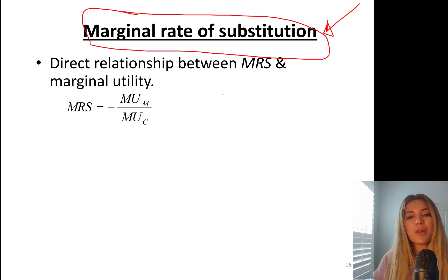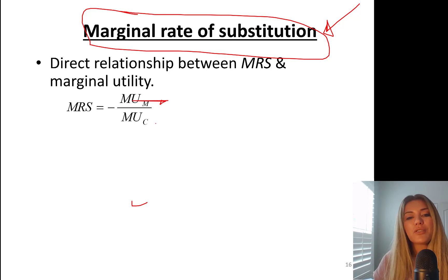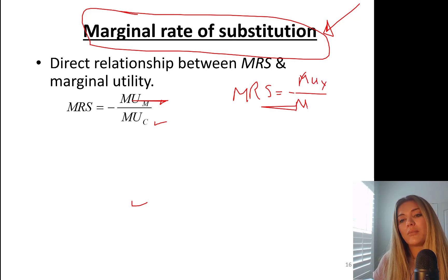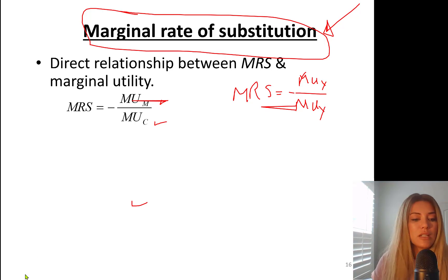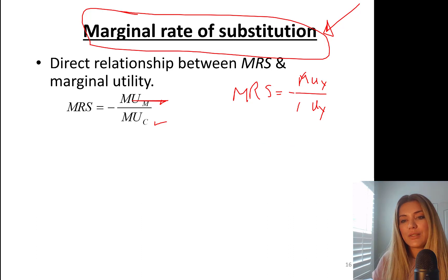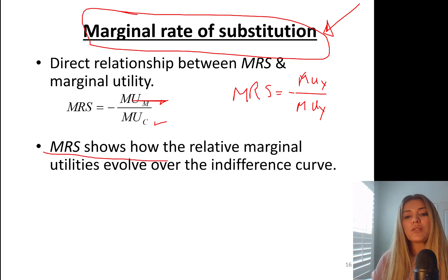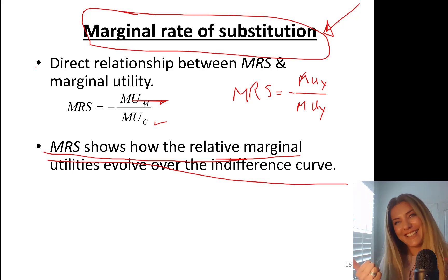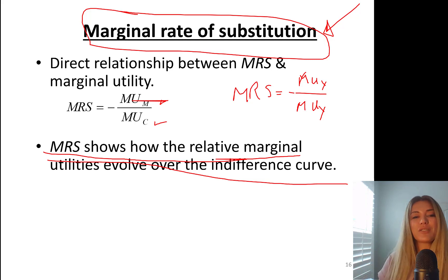So let's talk about the direct relationship between marginal rate of substitution and marginal utility. Marginal rate of substitution — the slope of the indifference curve — is equal to the negative value of marginal utility from movies divided by marginal utility from cakes. Just remember: MRS equals negative marginal utility of the X-axis good divided by marginal utility of the Y-axis good. MRS shows how the relative marginal utilities evolve over the indifference curve, and as you move east along the curve, MRS diminishes.